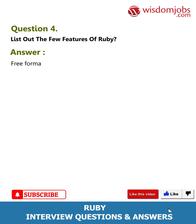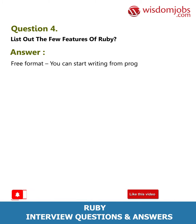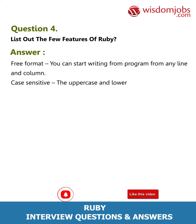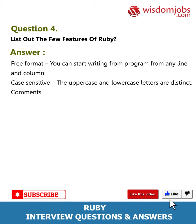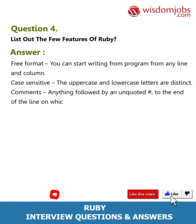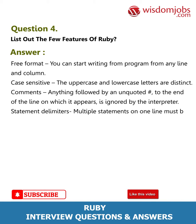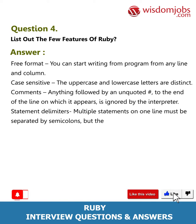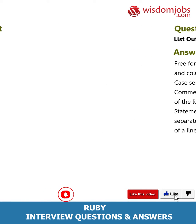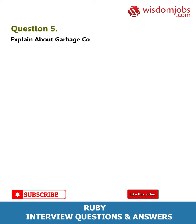Question 4: List out a few features of Ruby. Answer: Free format — you can start writing a program from any line and column. Case sensitive — uppercase and lowercase letters are distinct. Comments — anything followed by an unquoted hash to the end of the line is ignored by the interpreter. Statement delimiters — multiple statements on one line must be separated by semicolons, but they are not required at the end of a line.